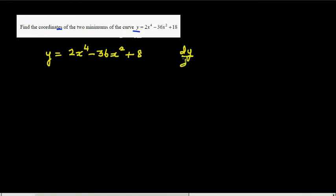So you just differentiate this. Let's differentiate, so dy by dx of this function is going to be 2 times 4 is 8x cubed minus 36 times 2 is 72x.